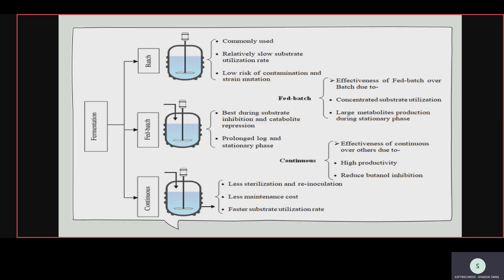Regarding operating systems — continuous, fed-batch, and batch: batch is commonly used, has a relatively slow substrate utilization rate, low risk of contamination and strain mutation, meaning it is contamination-free and mutation-free. No unwanted changes are formed in the product, and the product is pure and healthy in the batch process.